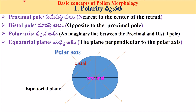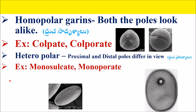NPC system of classification. Homopolar grains — both the proximal and distal poles look alike. For example, colpate and colporate pollen grains are homopolar grains.